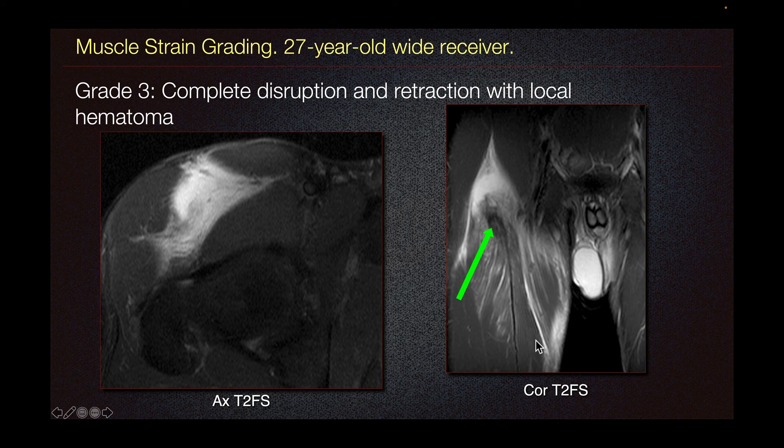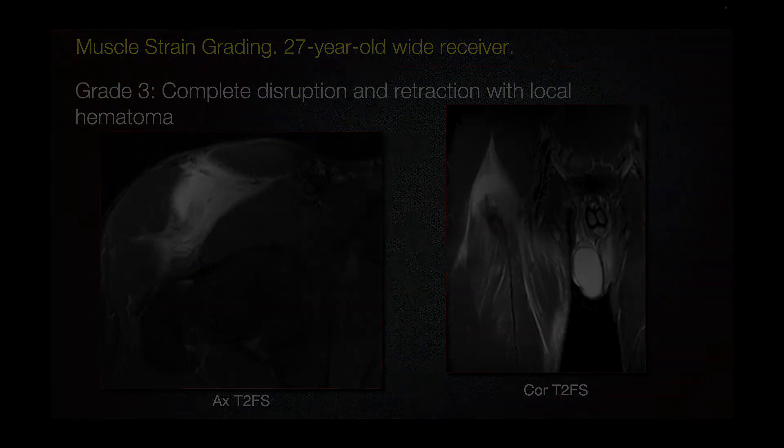An additional rectus femoris injury pattern is what we call the gloving injury, where the inner muscle belly is torn from the superficial muscle belly and retracted.